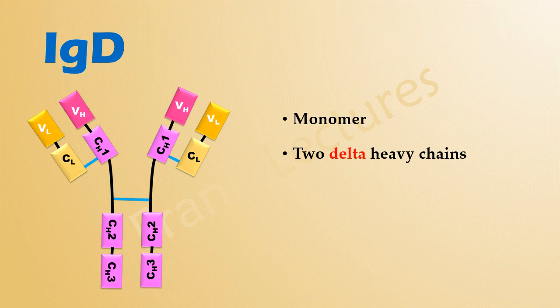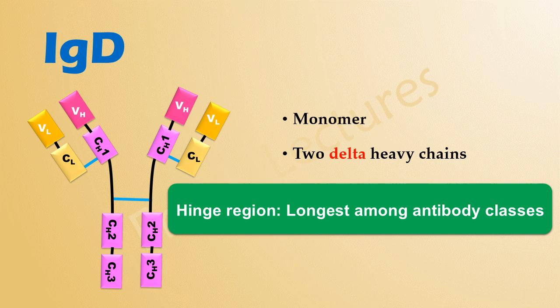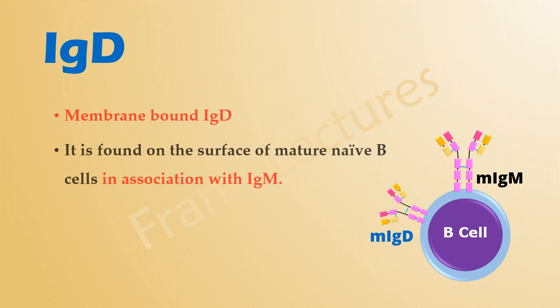The hinge region of IgD is the longest among all antibody classes, and it mostly remains membrane-bound. IgD is one of the main receptors on mature B cells. It is found on the surface of B cells alongside IgM, and together they form part of the B cell receptor complex.